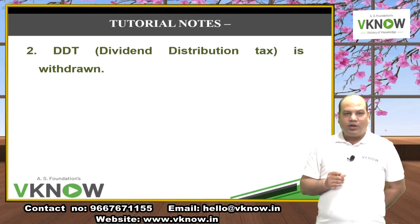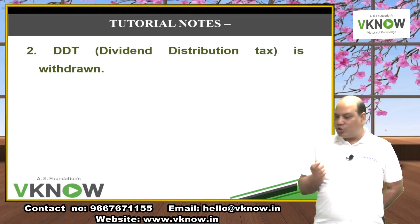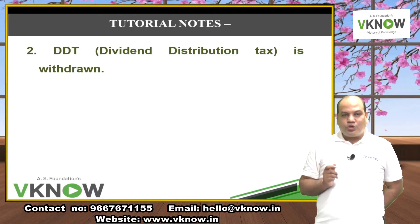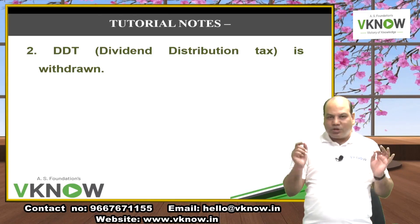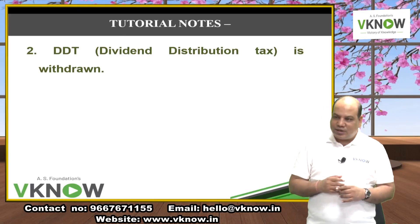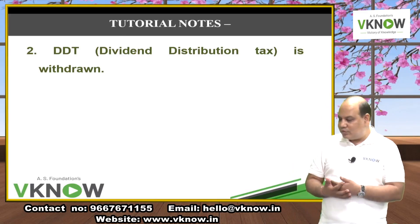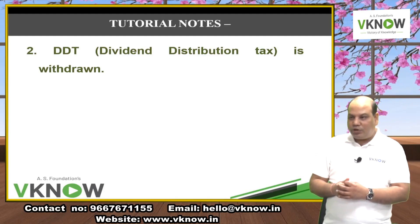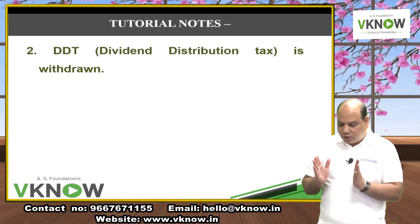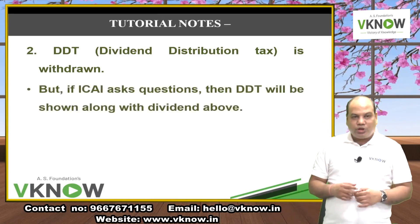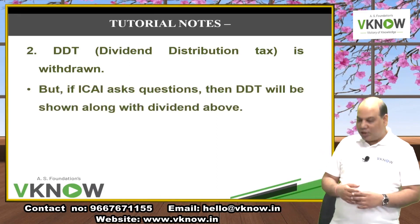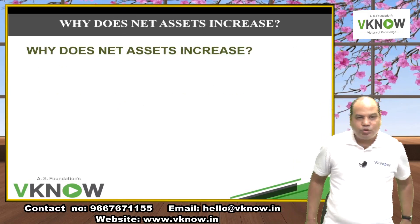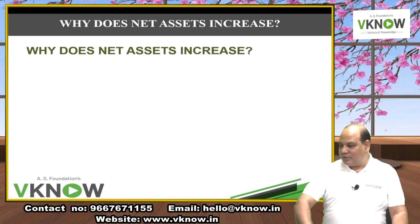Dividend Distribution Tax (DDT) — though the tax has been abolished, if the Institute asks about it in an exam, adjust it in the Statement of Changes in Equity. Deduct it from wherever the equity dividend was paid.